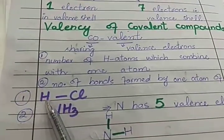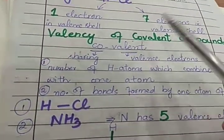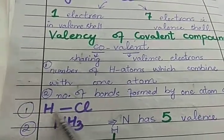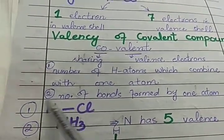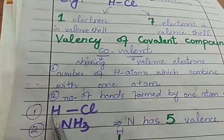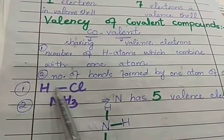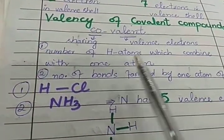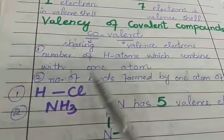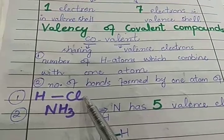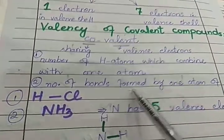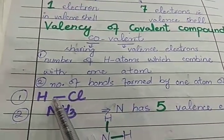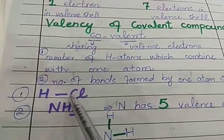In the HCl case, Chlorine has 7 electrons in its outermost shell. It needs 1 more electron to complete its valence shell, so it will form a bond with one hydrogen atom. Since one hydrogen atom is attached and one bond is formed, the valency of Chlorine in covalent compounds is 1. In NH3, the central atom is Nitrogen, and 3 hydrogen atoms are attached, so the valency of Nitrogen is 3.